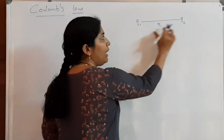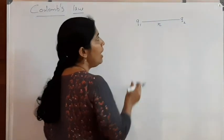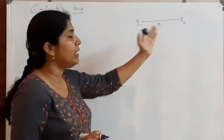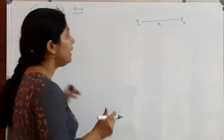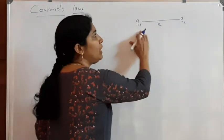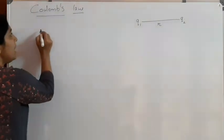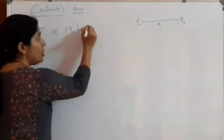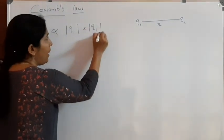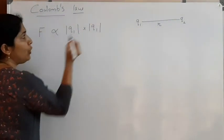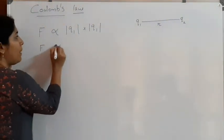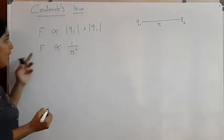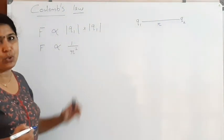The charges Q1 and Q2 are point charges because the size of these charges is very small as compared to the distance between Q1 and Q2. The force of attraction or repulsion between these two charges is directly proportional to the product of the magnitude of their charges, that is |Q1| × |Q2|, and force is inversely proportional to the square of the distance between them, that is F ∝ 1/R².